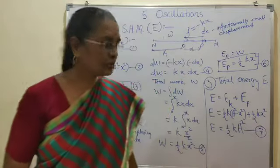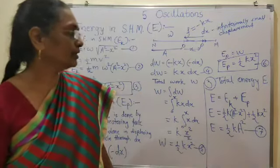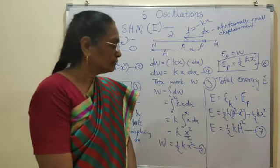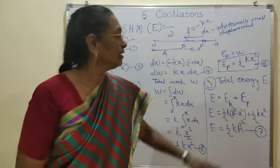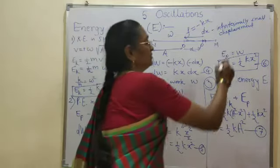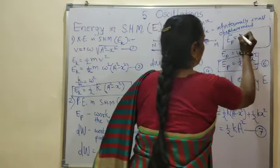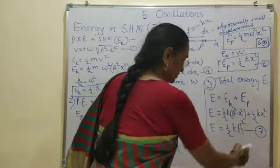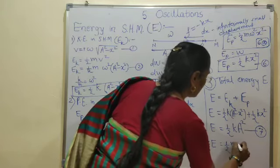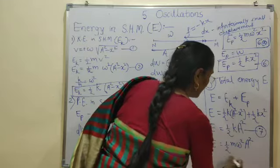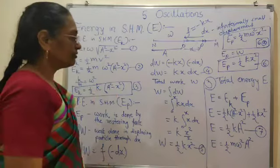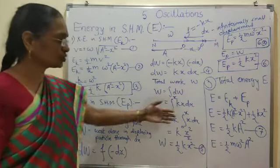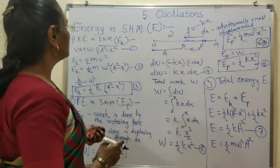The half KX squared terms cancel with the potential energy term, leaving E equals half KA squared. Here we have three relations — equations 3, 6, and 7. K can be replaced by M omega squared in equations 6 and 7. So EP can also be written as half M omega squared X squared (equation 8), and total energy E as half M omega squared A squared. Energy can thus be expressed in terms of force constant K or in terms of omega.